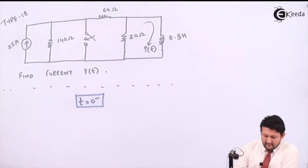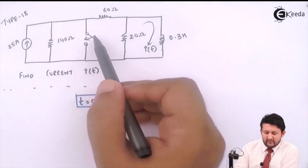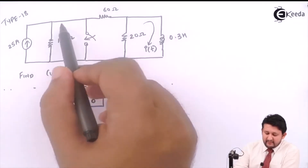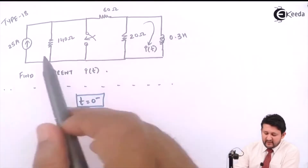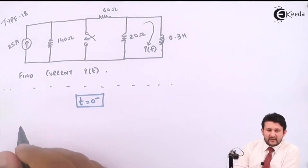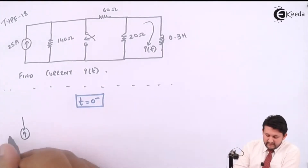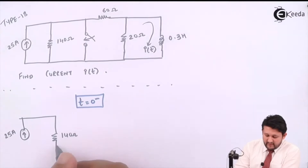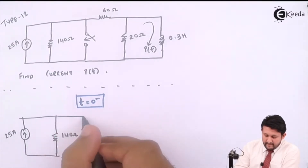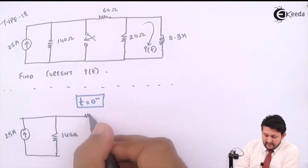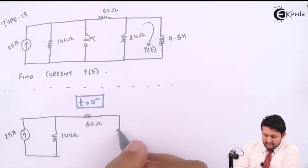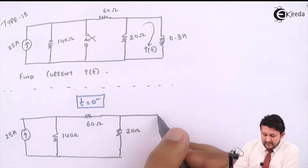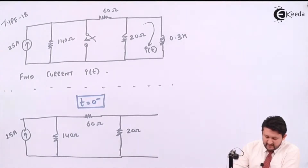Step by step: in the first case we observe at t = 0⁻ condition. When I say t = 0⁻, that means the switch will remain open. Even with the switch open, the remaining circuit is connected and the power supply has been flowing through the resistance and inductor for a very long time. So let's see how the circuit behaves — we have a current source, a resistance of 140 ohms, an open switch, and a resistance of 60 ohms.